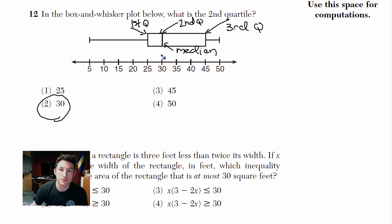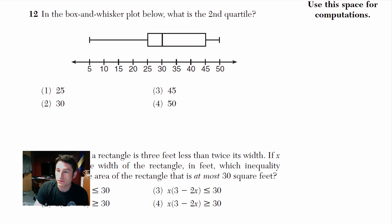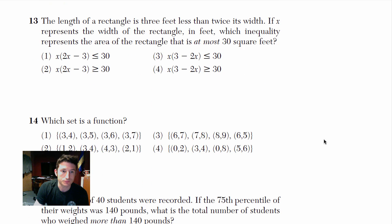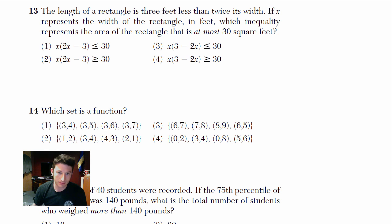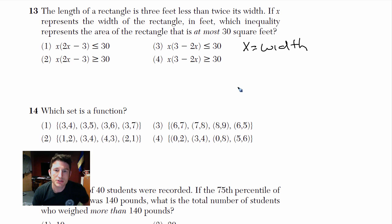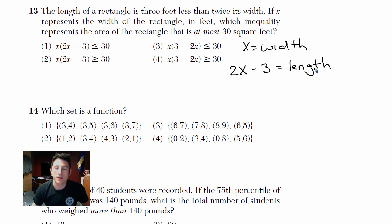Number 13: the length of a rectangle is 3 feet less than twice its width. X represents the width. So I'll write: x equals width. The length of the rectangle is 3 feet less than twice the width, so twice the width is 2x, and 3 feet less means minus 3. So the length is 2x minus 3.